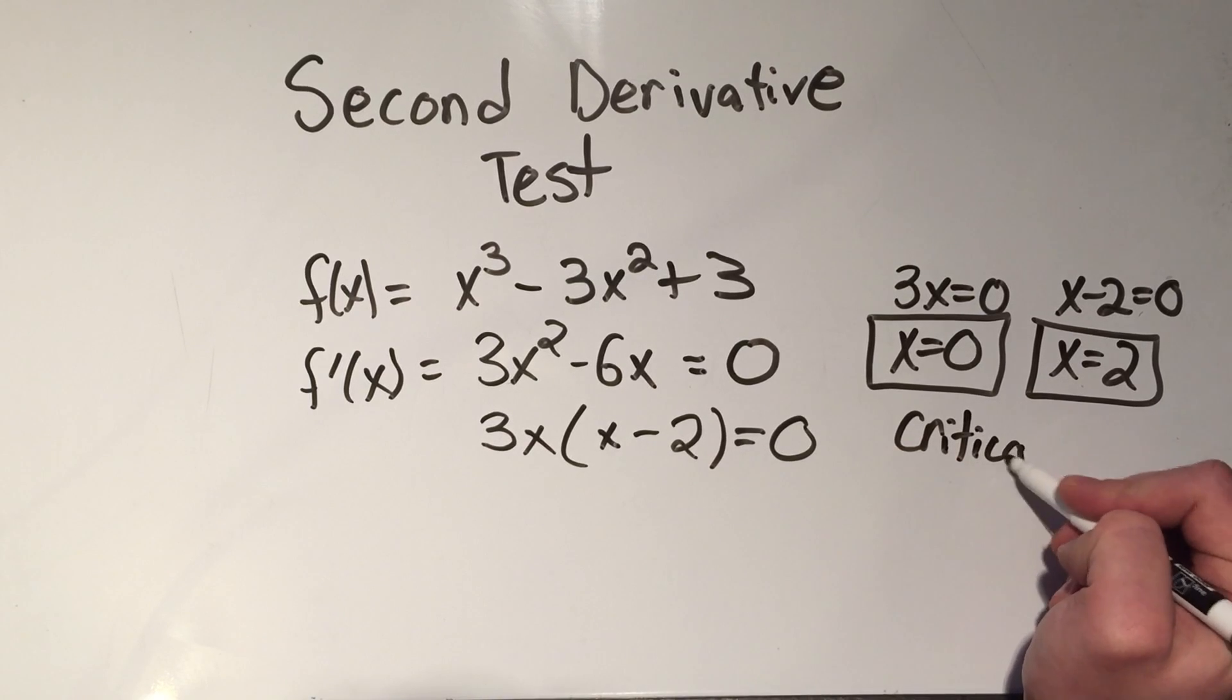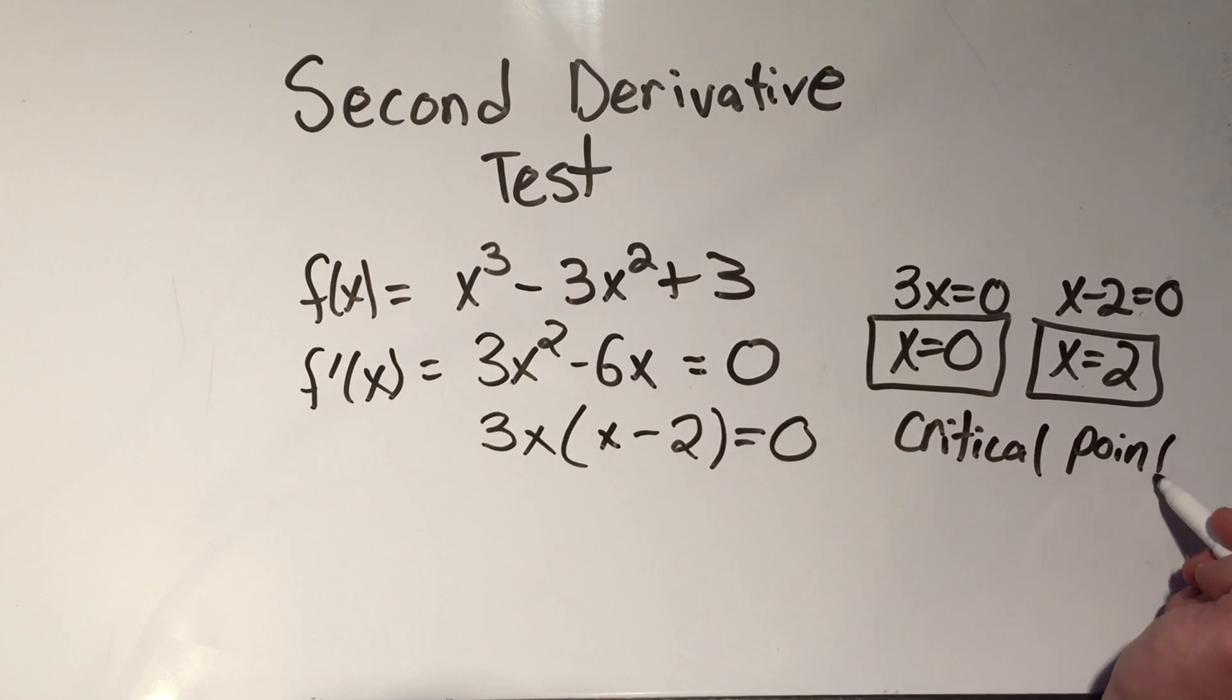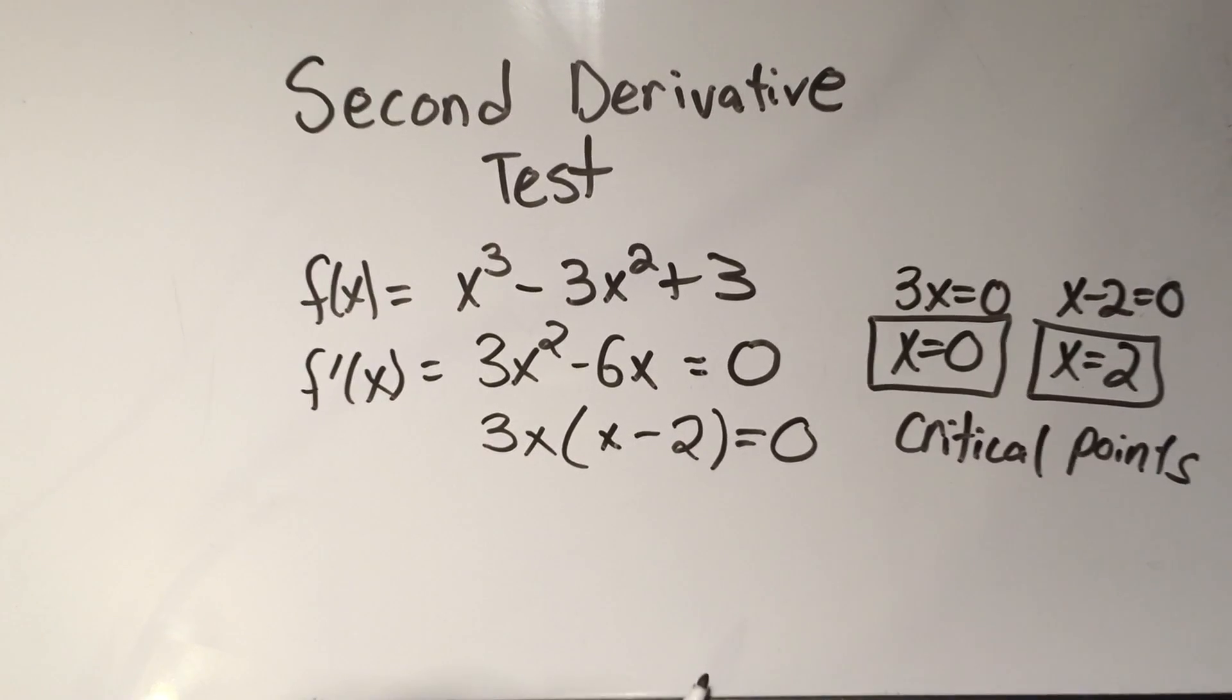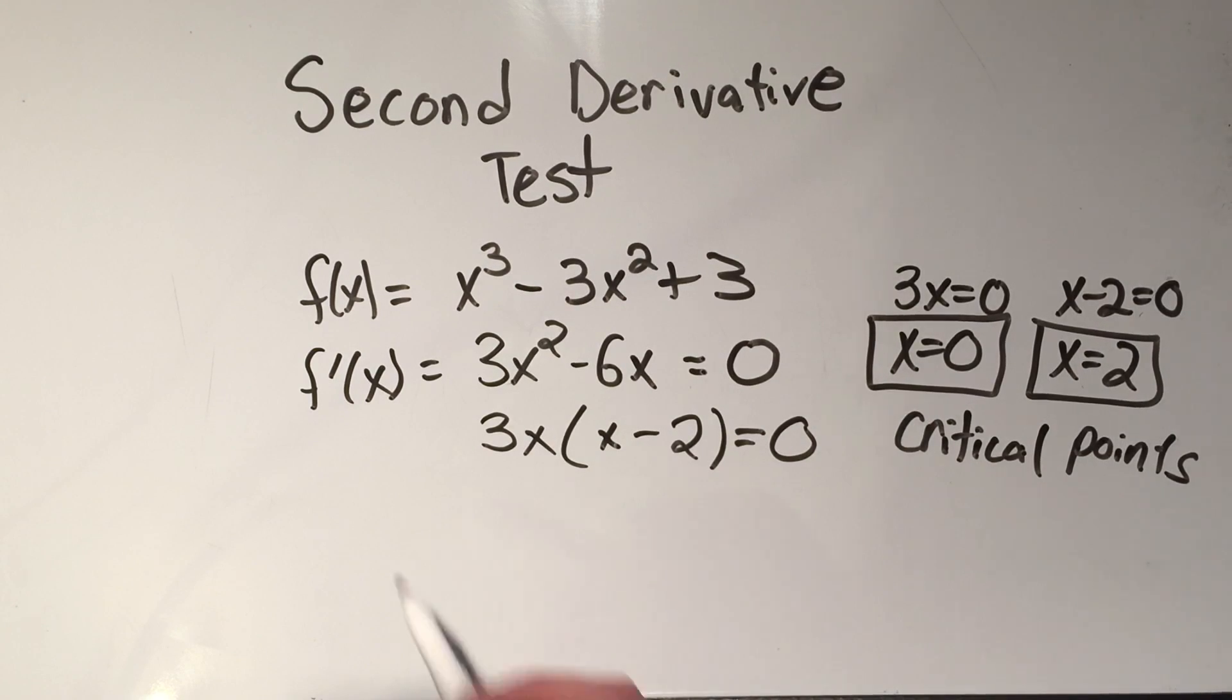You remember how to find those. And critical points will be the values at which your function attains a maximum or a minimum. So how do you tell which one's a max and which one's a min? Well, you could plug into the function and guess, but maybe it's not that easy. So we want to use the second derivative test, which means I need the second derivative.